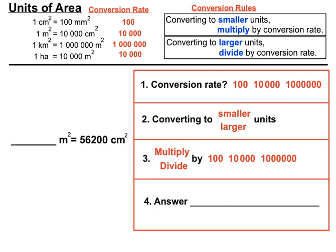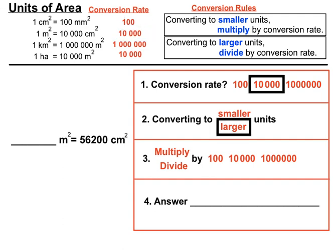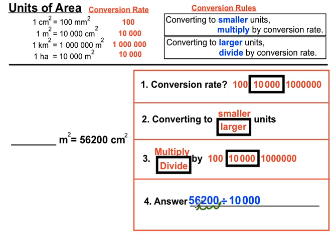Working with metres squared and centimetres squared again — conversion rate of 10,000 — but this time going the other direction, moving to larger units. So we divide by 10,000, moving the decimal point four places to the left. The answer is 5.62 m².